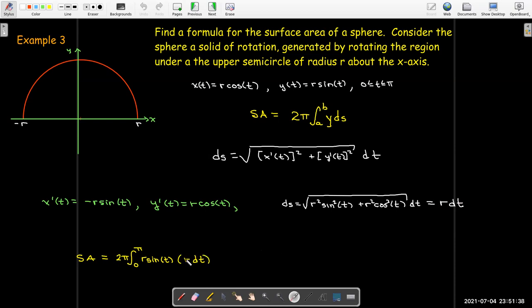So r is just a constant here. So what I'm going to do is bring that out in front. r times r gives me 2 pi r squared. And that derivative of sine is negative cosine. And I'll evaluate that between 0 and pi. And so cosine of pi is negative 1 minus cosine of 0, which is 1. So that will give me negative 2 times negative 2 pi r squared, which will give me the well-known formula.